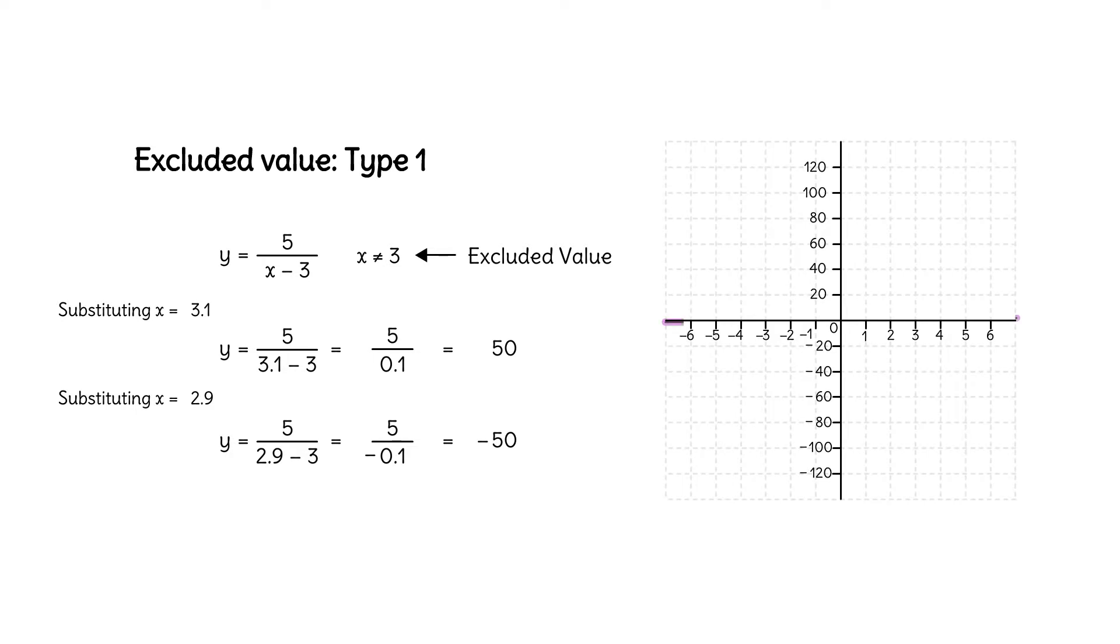We can see this in the graph of y equals 5 over x minus 3. There is no y-value for an x-value of 3, but the graph balloons to infinity for x-values close to 3. You might recognize this feature as a vertical asymptote. You'll see these frequently when graphing rational functions.